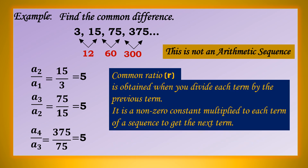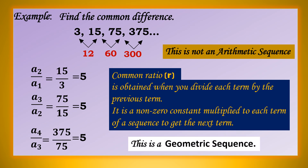Common ratio is obtained when you divide each term by the previous term. It must be a non-zero constant multiplied to each term of a sequence to get the next term. Yung 5 na ito, ang tawag dyan ay common ratio, represented by small letter R. So, i-multiply mo ngayon yung 5 dun sa first term: 3 times 5 is 15, 15 times 5 is 75, 75 times 5 is 375. Ang common ratio natin ay 5. If the sequence has a common ratio, it is called a geometric sequence.